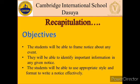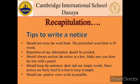We have also discussed the aims and objectives of writing notices. For example, you will be able to identify important information in any given notice, or you will be able to use appropriate style and format to write a notice effectively. We also discussed some tips on how to write an effective notice — for example, we should not cross the word limit; the prescribed word limit is 50 words, and repetition of any information should be avoided.